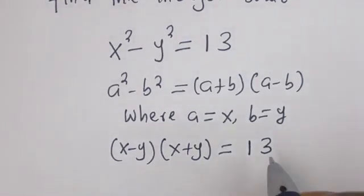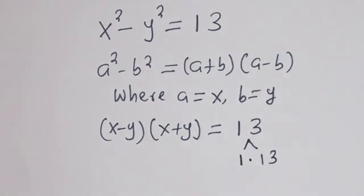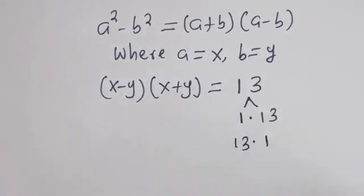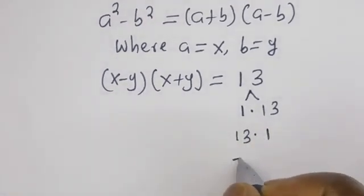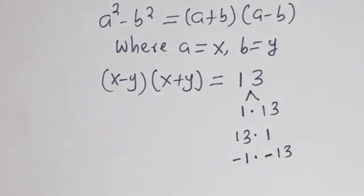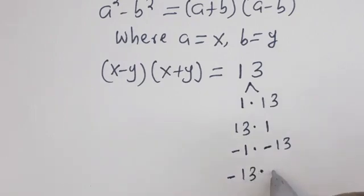Now, 13 can be written as 1 multiplied by 13, then 13 multiplied by 1, because we want to find the integer solution. Also, 13 is minus 1 multiplied by minus 13, and also minus 13 multiplied by minus 1.